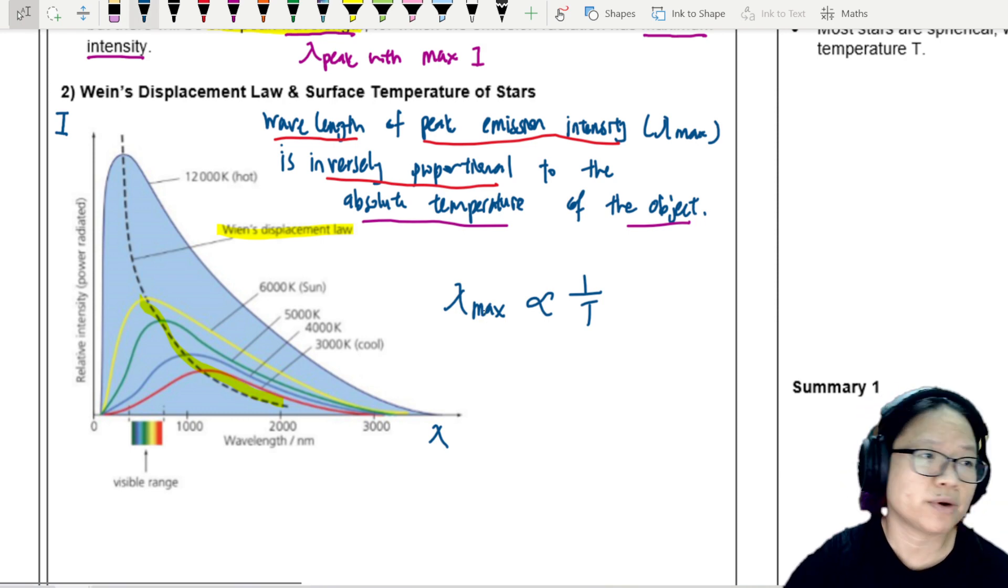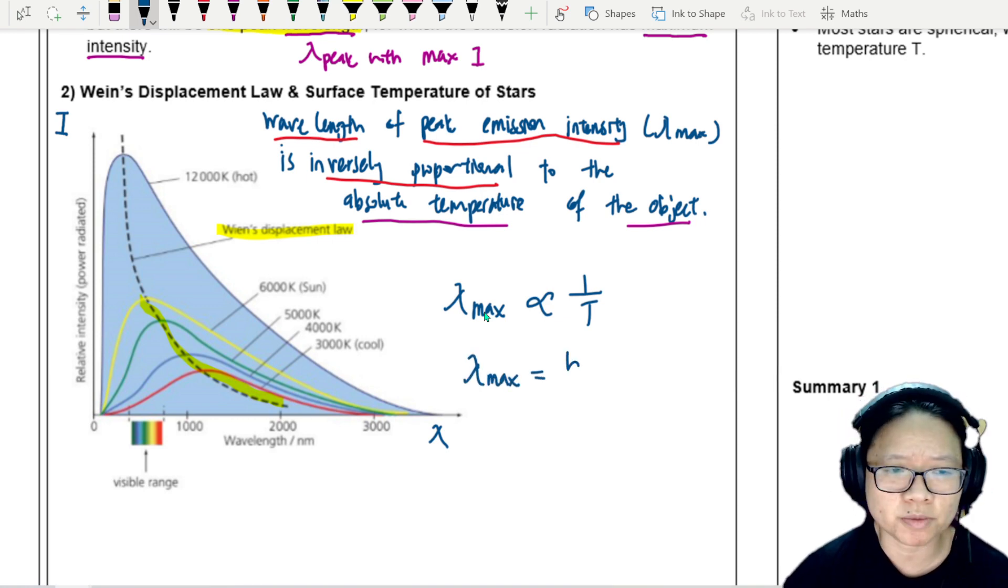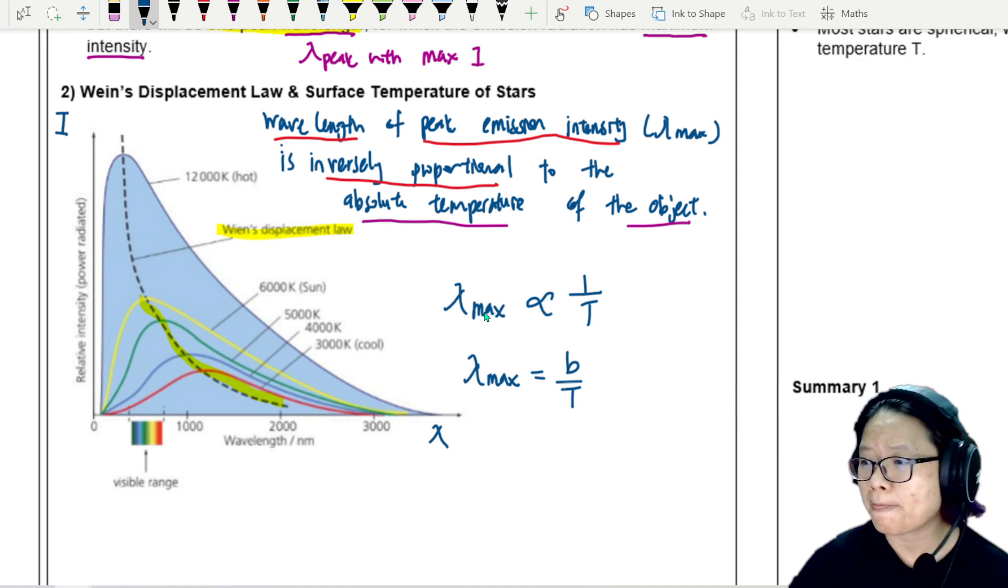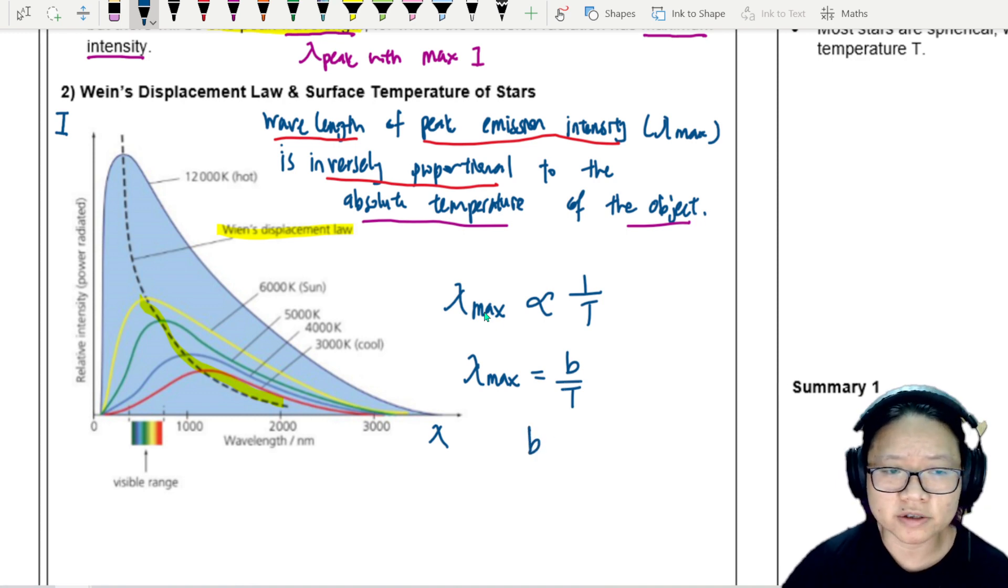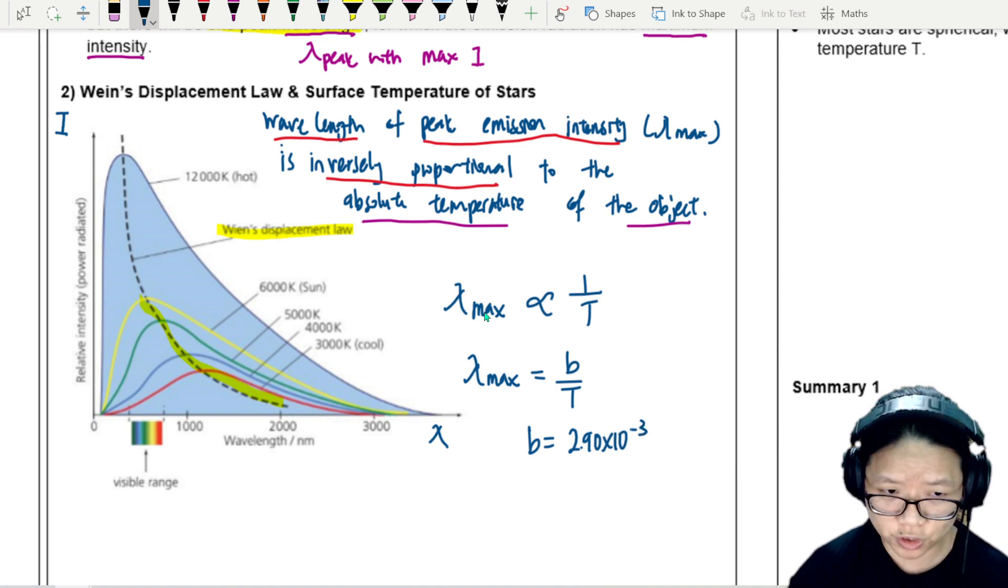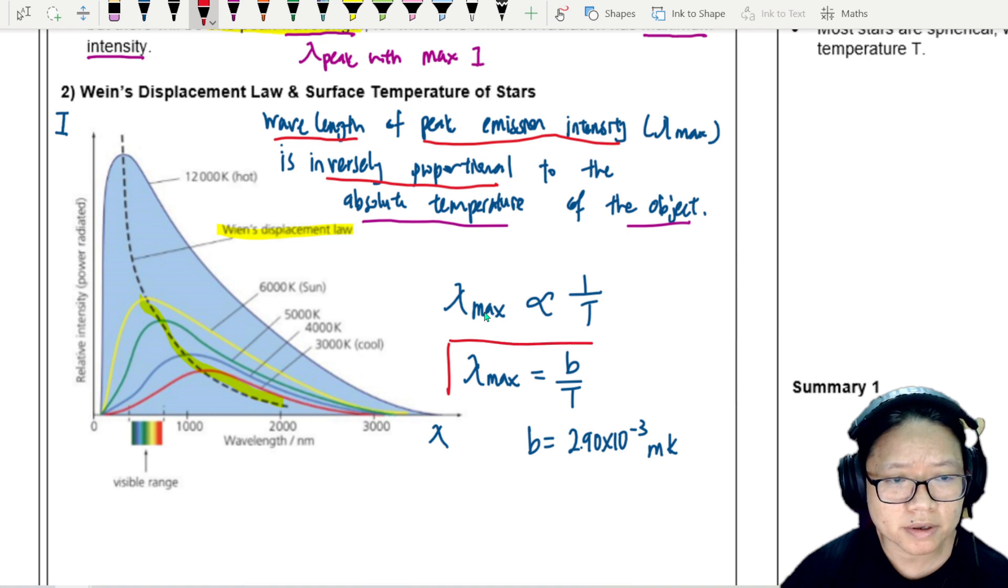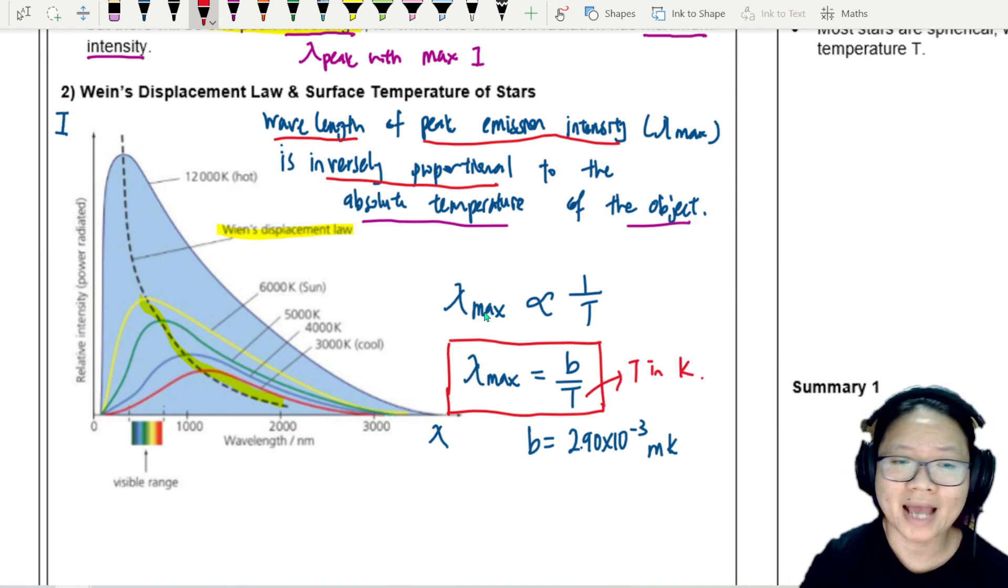So this Wien's displacement law allows us to reliably predict or estimate the temperature of your stars. So as usual, when there's a directly proportional sign, it's not very user-friendly. So for calculation purposes, we can replace this with B over T. Where B, the constant B is given, 2.90 times 10 to the power of negative 3 meter Kelvin. So I'm just gonna box this up. And also just remind you that this T is in Kelvin, absolute temperature.